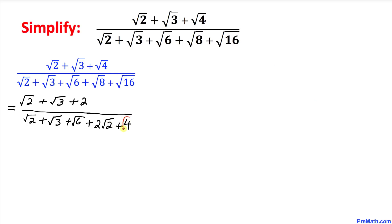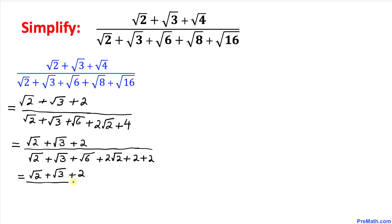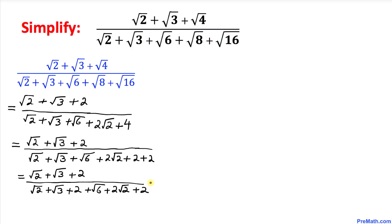Now let's manipulate the denominator. The 4 at the end can be written as 2 plus 2. So in the denominator I replace 4 with 2 plus 2. Then I rearrange: square root of 2, plus square root of 3, then bringing the 2 forward, followed by square root of 6, plus 2 square root of 2, plus 2. Let's call this equation number one.